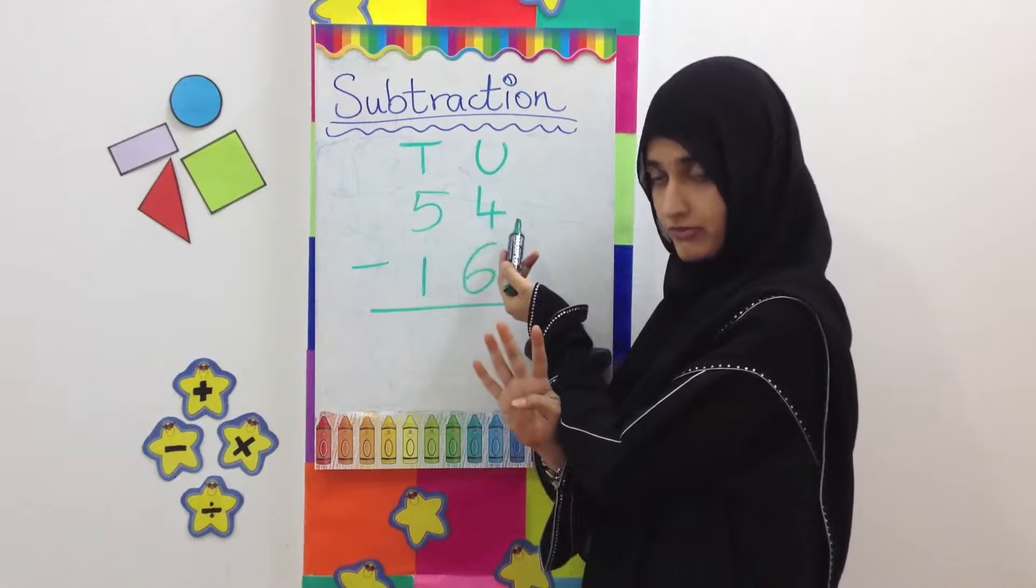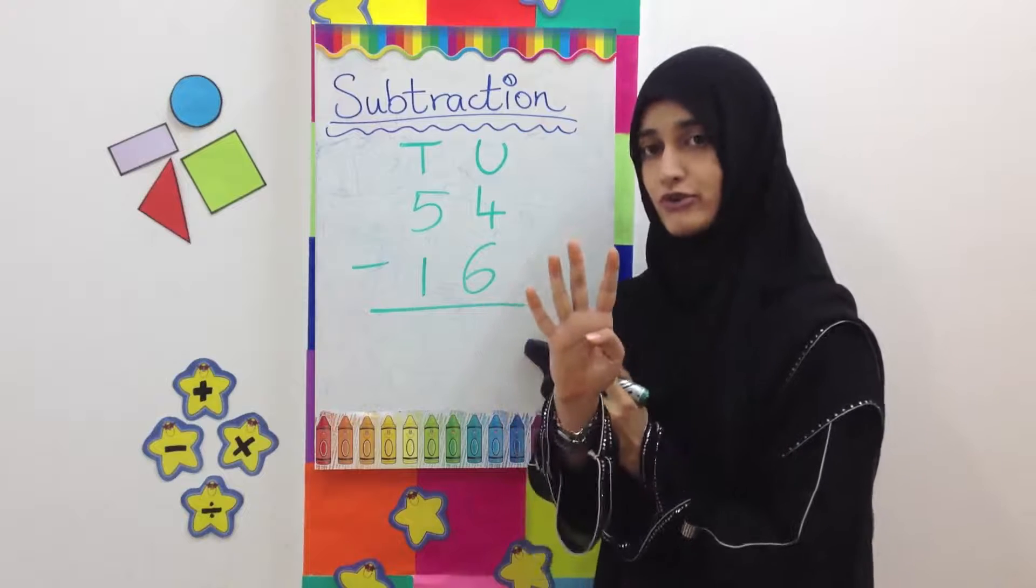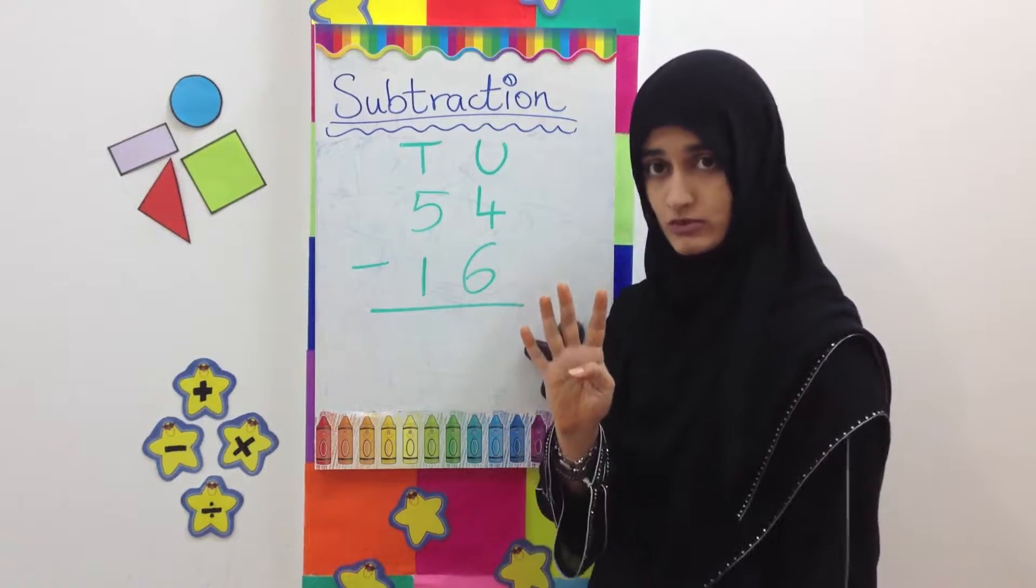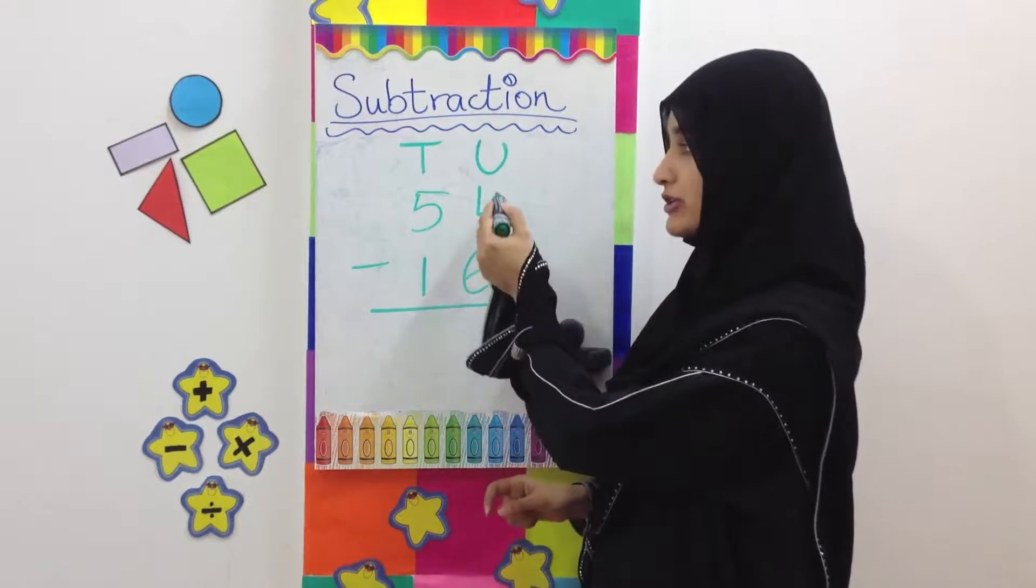We have 4 units but we have to take away 6 units from it. So we have 4, can we take away 6 from it? It's not possible, it's impossible.